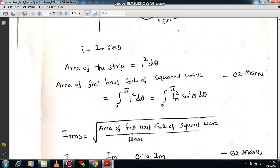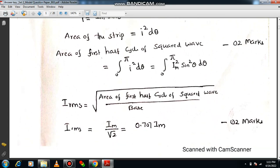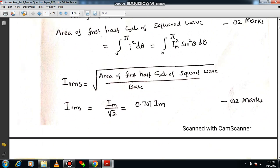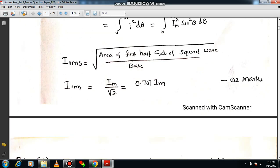Consider the area of the strip. Then you have to consider the time period from 0 to π, because you will be considering only the half cycle of the square wave. Then RMS value formula will be square root of area of first half cycle of square wave divided by base. Then you will be getting the expression IRMS = Im/√2, that is equal to 0.707Im.